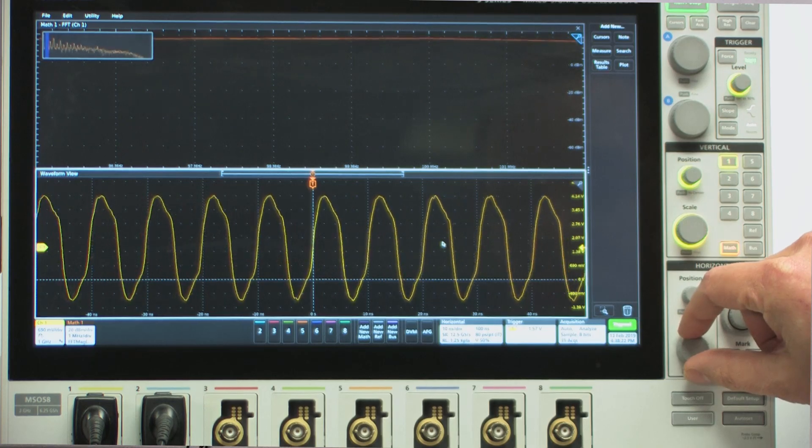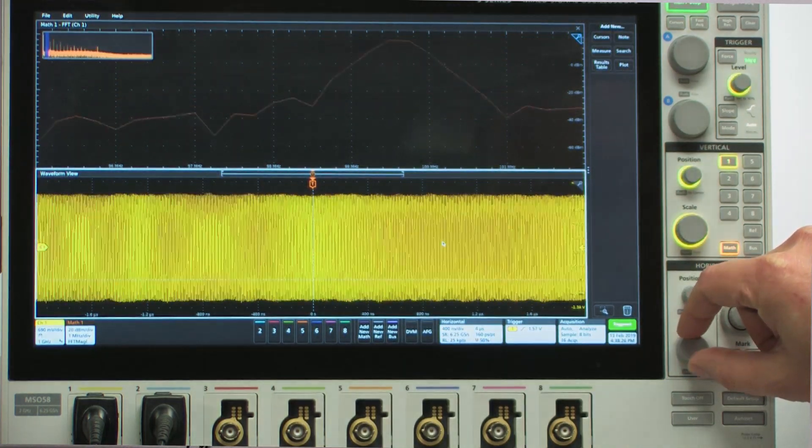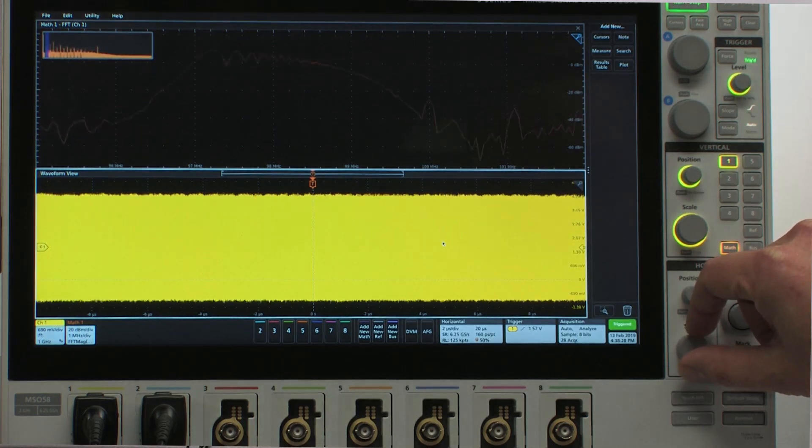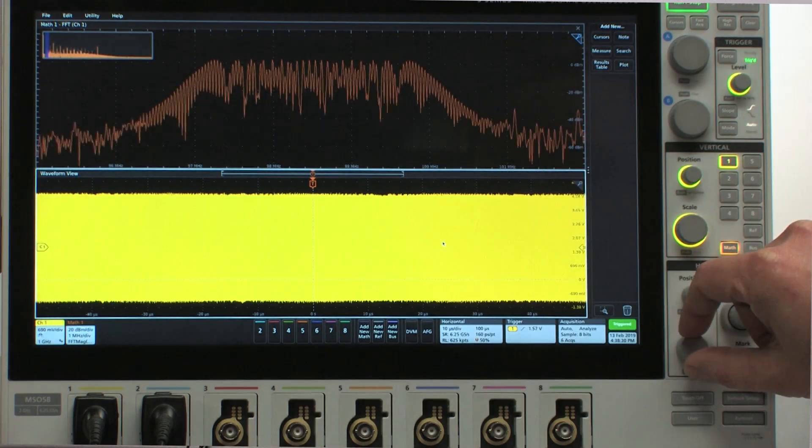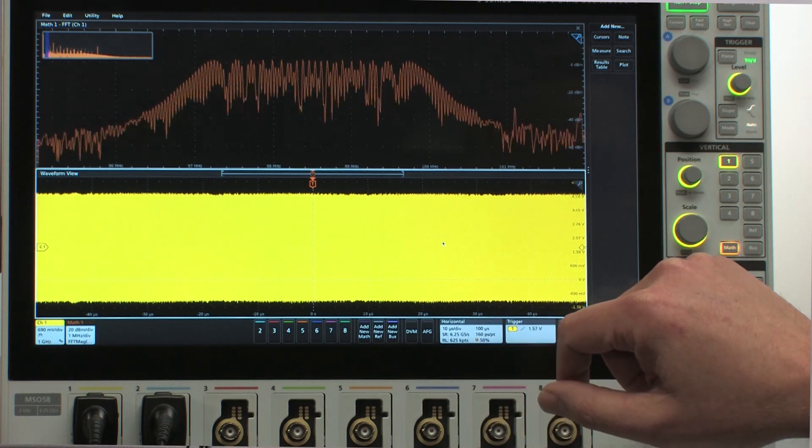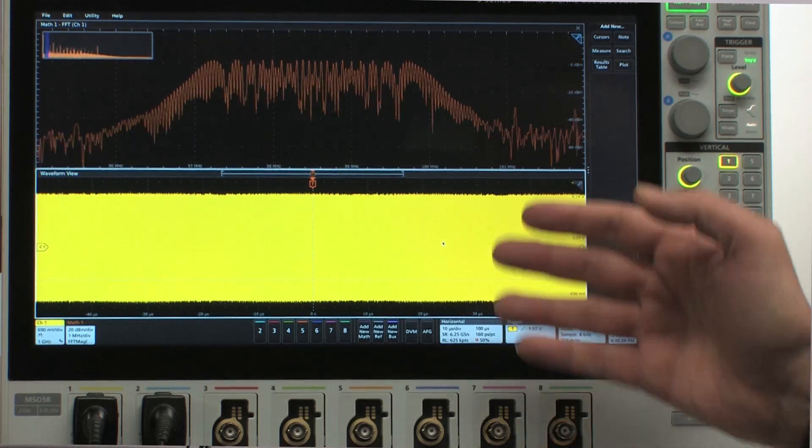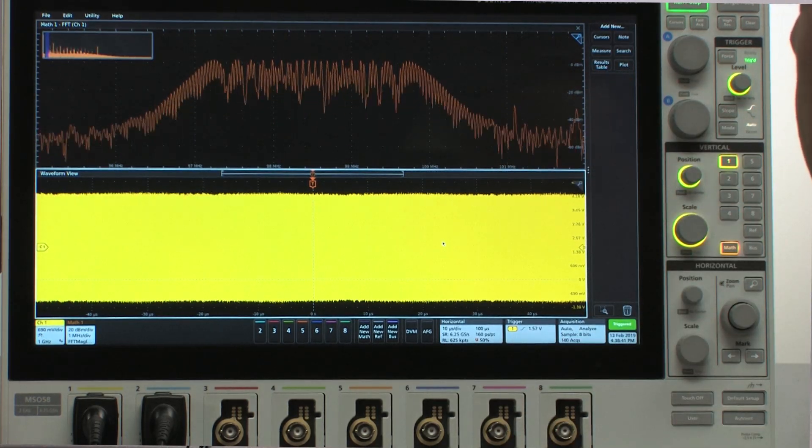So let's go ahead and do that. As I go to slower and slower sweep speeds, notice that I get better resolution in my FFT view, to the point where when I get to 10 microseconds per division I can see the characteristics of my spread spectrum clock.